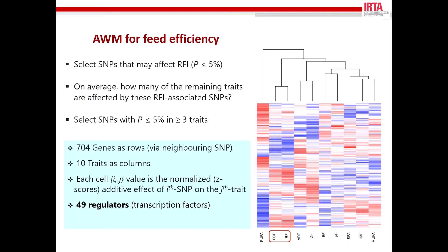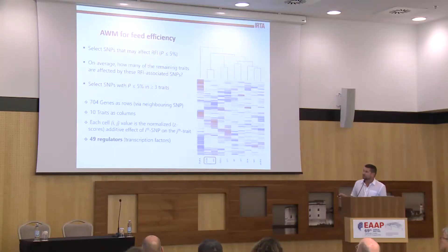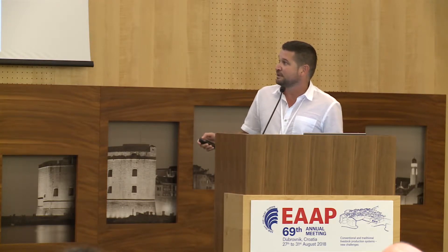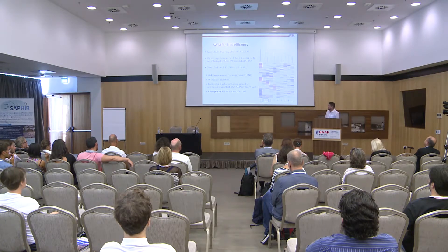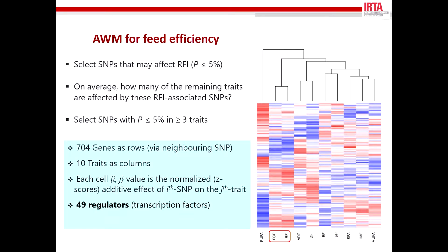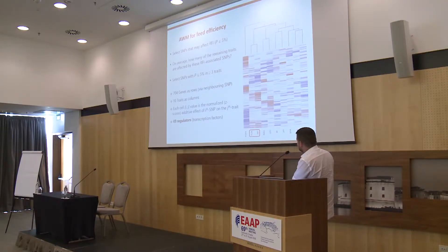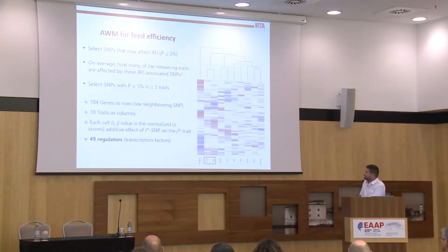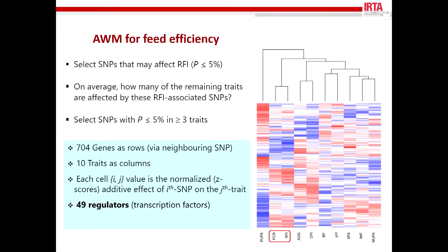Then we explored the dependencies of the markers and the idea is to take advantage of the genetic contribution of correlated traits, so we included other markers that, even when not associated with residual feed intake, are associated with at least one other trait. At the end we have a matrix with 704 genes and 11 columns, and from those 704 genes we identified 49 regulators — 49 transcription factors. The heatmap shows that using the additive estimated values from the GWAS you can reconstruct the physiological and correlation relationships between the traits.